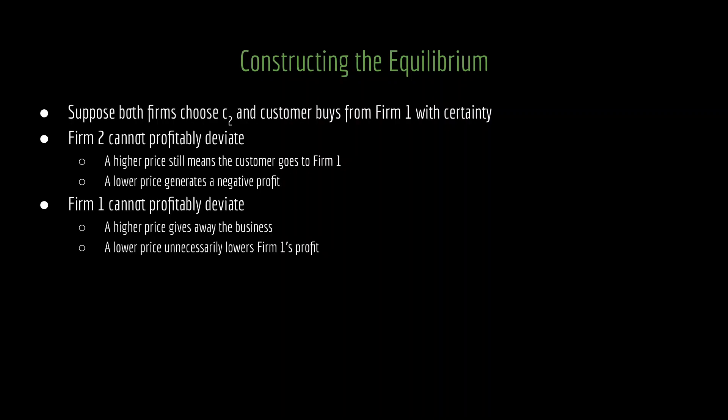Firm 1 cannot profitably deviate either. If firm 1 were to set a higher price, then it's giving away the business — it's not going to be able to sell the product to the consumer. If it sets a lower price, this will unnecessarily lower firm 1's profit. Firm 1 is currently getting the business; its profit is equal to the price that it is setting minus its own marginal cost, which is going to be some sort of positive amount. And if you set the price lower, you might still get some sort of profit, but it's going to be less than it was before. So firm 1, who is currently getting all of the business, has no incentive to lower their price. You also don't have an incentive to raise your price. And so we have an equilibrium.